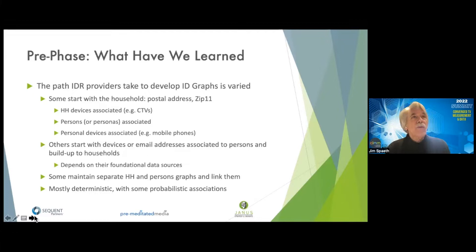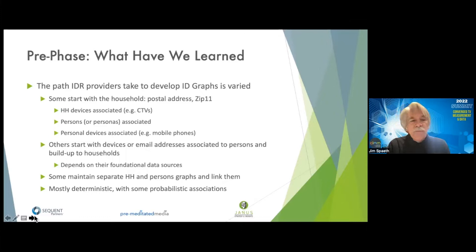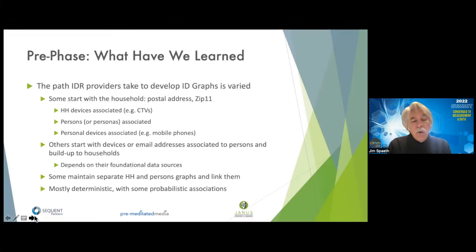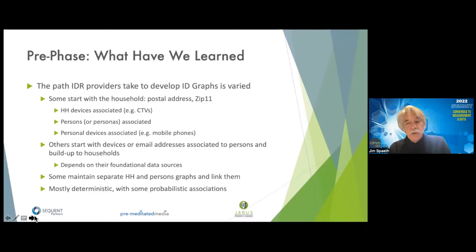We're still lining up all the pieces we need here, but we have had in-depth interviews with all of the identity providers, and in that process we've learned a fair amount about the matching process. Some providers will start with households — often identified with a postal address or ZIP+11 — then devices in the household like a smart television or connected TV are associated with that household, then persons or masked personas are associated with the household, and then the devices of those people like mobile phones get matched.